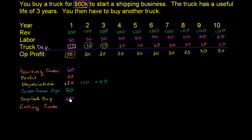So it all works out: we got $50,000 cash from operations. That makes sense because our revenue was $100,000, and the cash labor — people's salaries — was $50,000, leaving $50,000 of cash profit. The depreciation was not a cash expense, so from operations we had $50,000. But we did have capital expenditures of $60,000 for the truck. So our ending cash is 60 plus 50 minus 60, which equals $50,000.